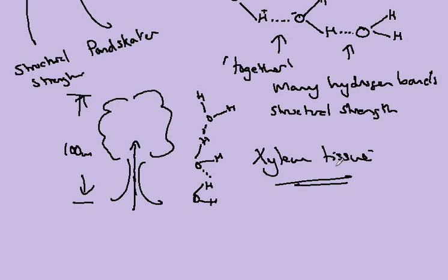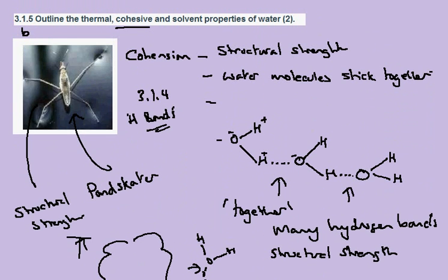Another example of cohesion: water molecules are able to be pulled up to the top of a tree and the bonds don't break unless there is an excessive pulling force. For the most part they remain stuck together. The property we're looking at here is cohesion, the structural strength that arises when water molecules stick together because of hydrogen bonds.